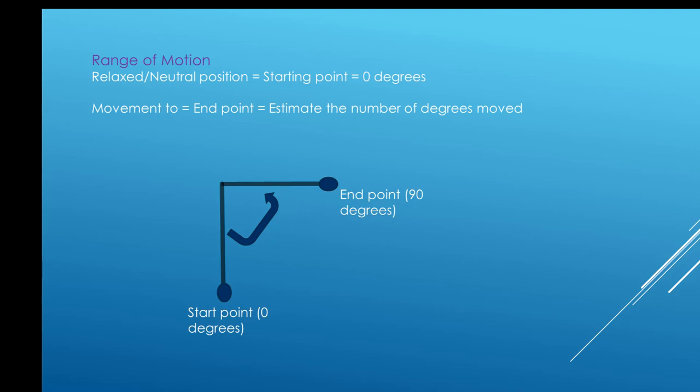A point to remember: prior to assessing angles and range of motion, you will need to start with the joint at a relaxed, neutral position of 0 degrees, which is your starting point. Afterwards, estimate the difference in angle from your start point to the end point the patient is able to move to.